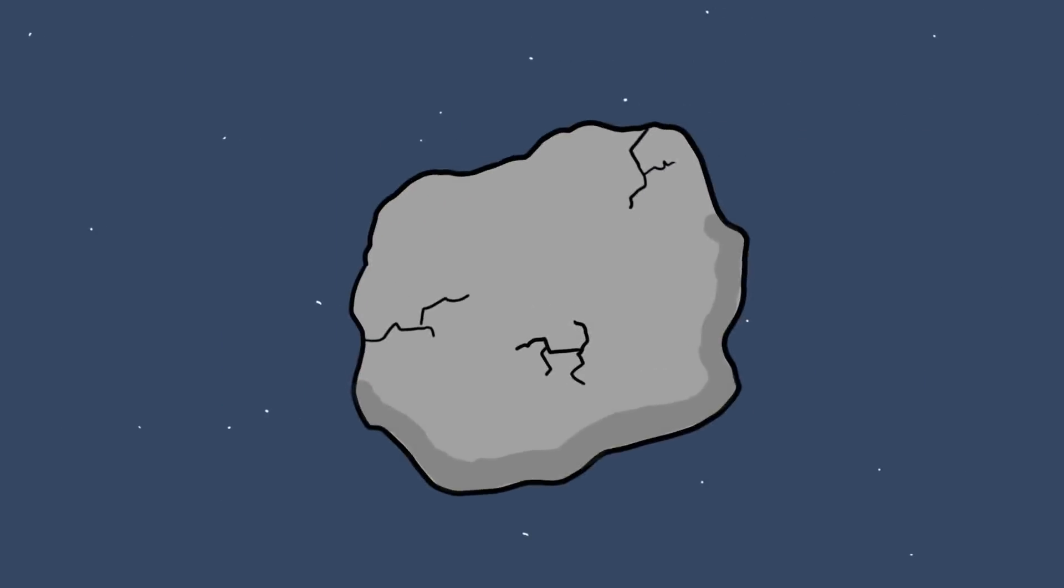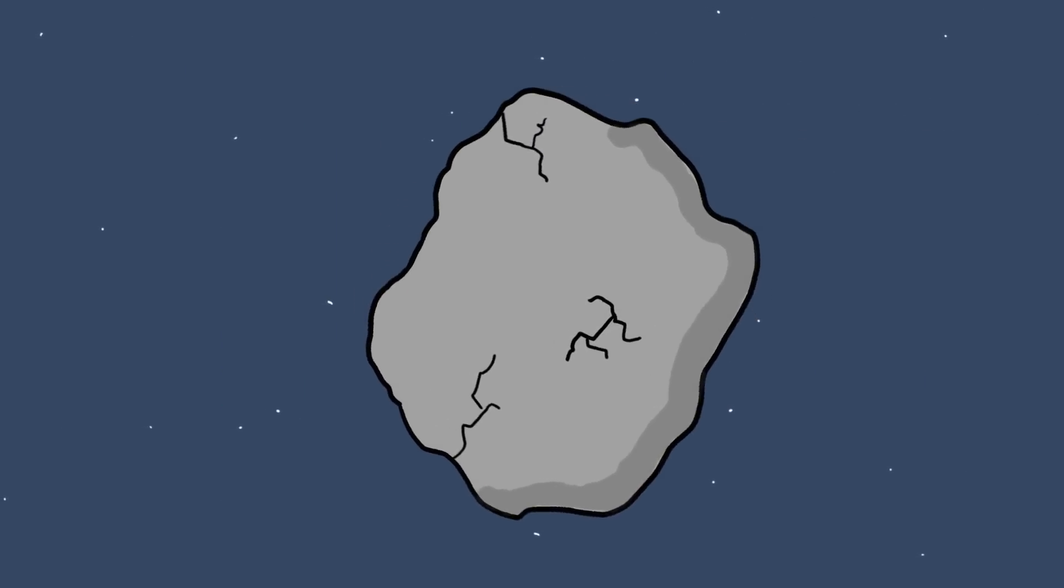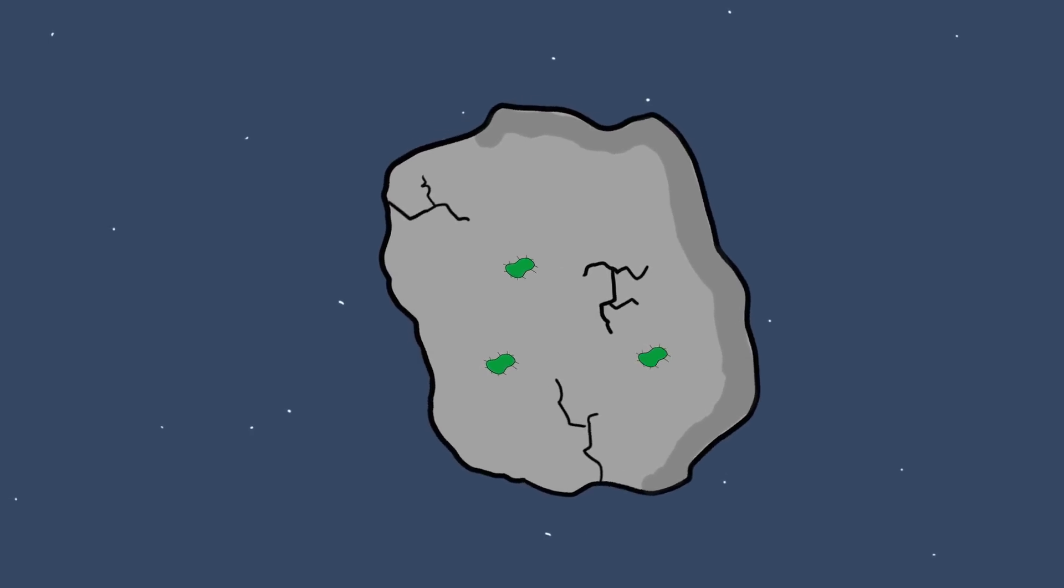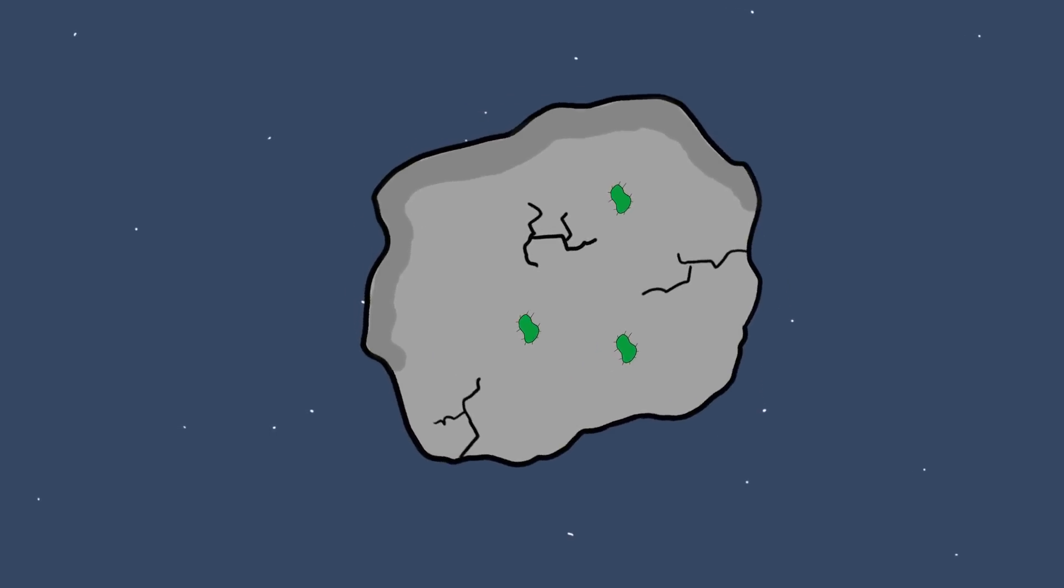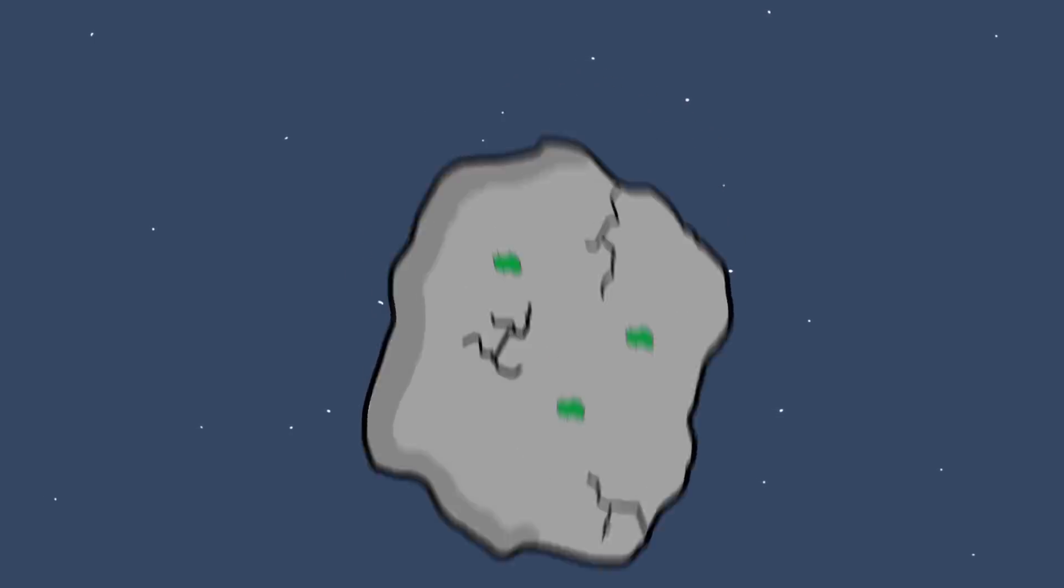Another prominent hypothesis is that of panspermia, the idea that life may have been seeded on Earth by asteroid impacts. This idea is a little different in that it doesn't attempt to explain how life originated, just how it got to Earth.